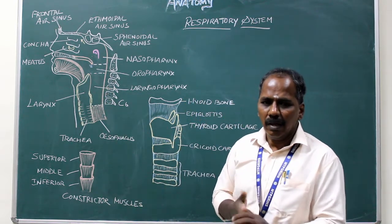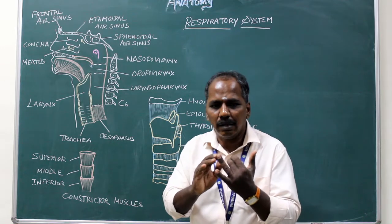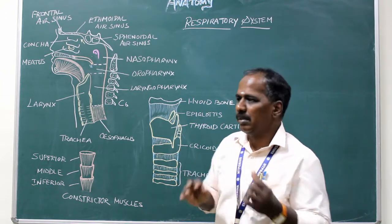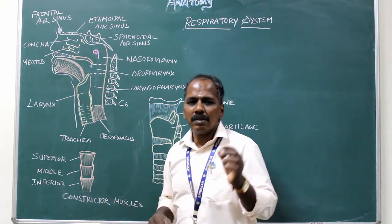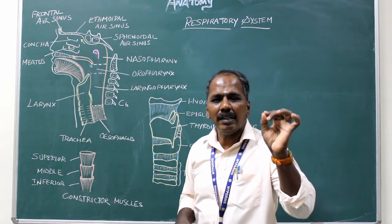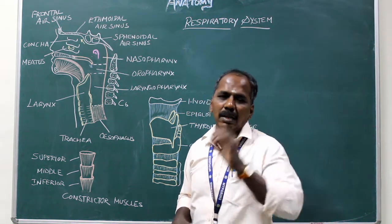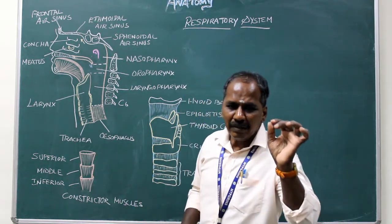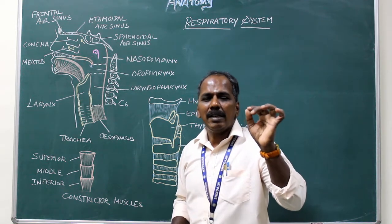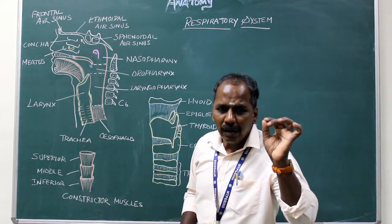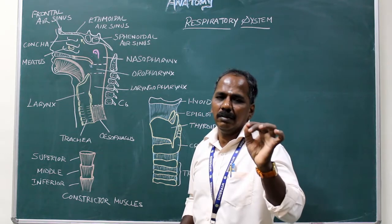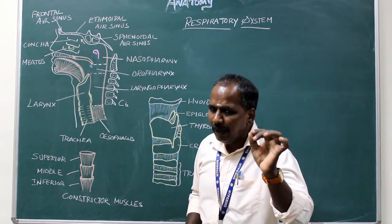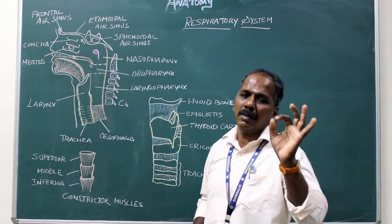Nerve supply — Sensory: The mucous membrane of the pharynx is supplied by the glossopharyngeal nerve (ninth cranial nerve) and the vagus nerve (tenth cranial nerve). Motor: The muscles of the pharynx are supplied by the cranial part of the accessory nerve (eleventh cranial nerve), except the stylopharyngeus muscle, which is supplied by the glossopharyngeal nerve (ninth cranial nerve).